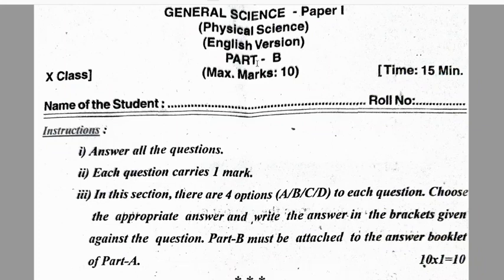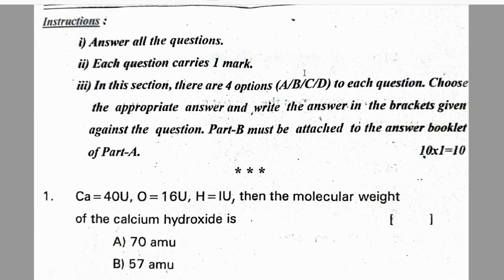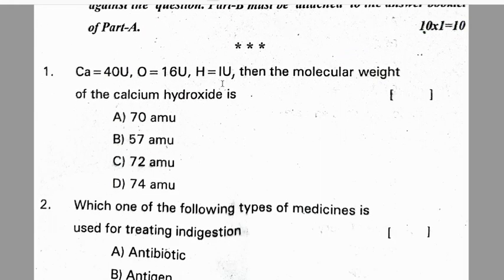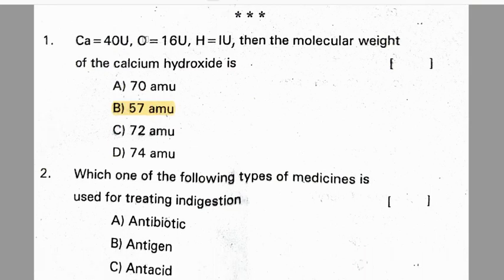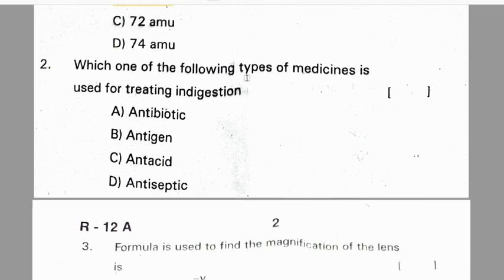We will discuss Physical Science Part B. This is a question paper from Rangareddy district. First question: molecular weight of calcium hydroxide is 57 amu — correct option is D. To get 57, just add Ca + O + H: 40 + 16 + 1 = 57. Second question: which type of medicine is used for treating indigestion and acidity — correct option is C.